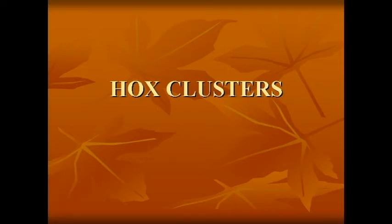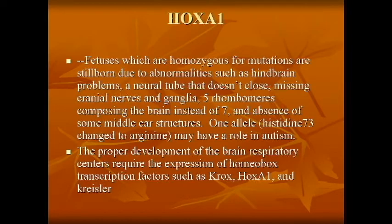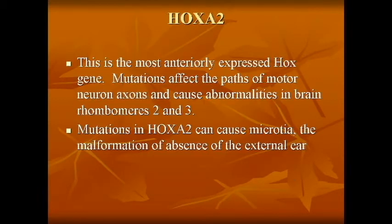As mentioned, in the human genome on chromosomes 17, 7, 12, and 2, there are four Hox clusters which are homologous to the one single Hox cluster possessed by invertebrates.